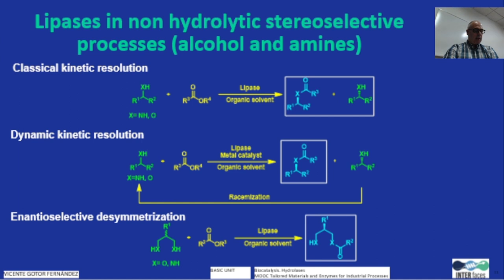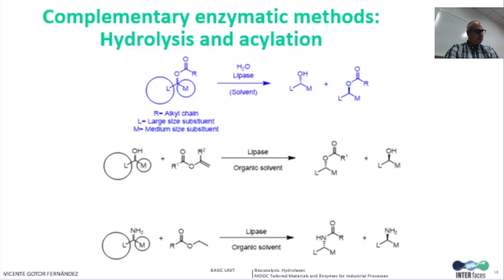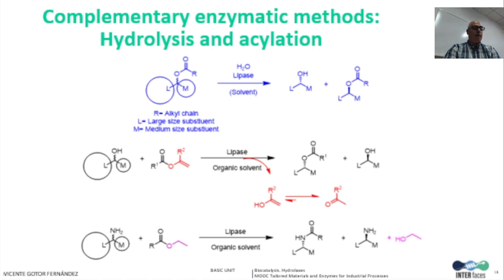And finally, the desymmetrization of prochiral meso compounds allows the formation of an enantiopure product in theoretically 100% yield. The application of Kazlauskas's rules is also applicable for the acylation of the corresponding secondary alcohols to afford opposite esters and alcohol enantiomers, which can be achieved through hydrolytic reactions. For the modification of alcohols, activated esters such as vinyl acetate or isopropenyl acetate are used to irreversibly shift the equilibrium by releasing acetaldehyde or acetone respectively. In the case of amines, non-activated esters such as alkyl esters are preferred to avoid the formation of undesired products, as the released alcohols are less nucleophilic than amines and do not compete with the main acylation reaction.